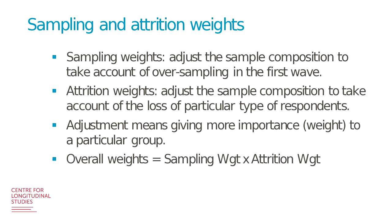The sampling weights adjust for the sampling design, while the attrition weights adjust for the loss of particular types of respondents. So if we are losing boy cohort members, we need to give more weight to the remaining boys in the sample. In MCS, the overall weights are equal to the product of the sampling weights multiplied by the attrition weights.